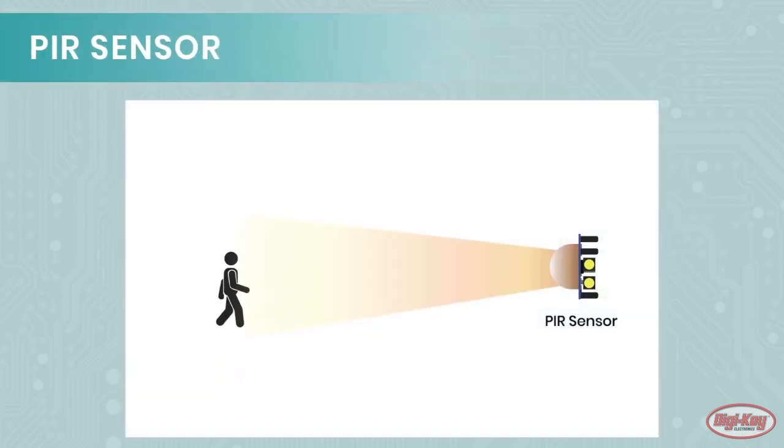Instead, the PIR module splits pyroelectric sensors into two halves that each measure the environment and are connected in such a way that they cancel each other out. When a warm body passes the sensor, there is an imbalance between the two halves, causing the output to change.